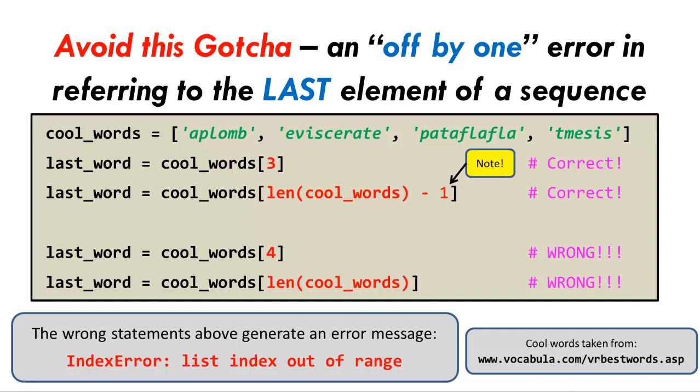But if you attempt to reference cool_words[4], that is one past the end of the list and causes the code to die at the attempted reference. Likewise, using the length of the list as the index means going one past the end of the list and again causes the code to die.